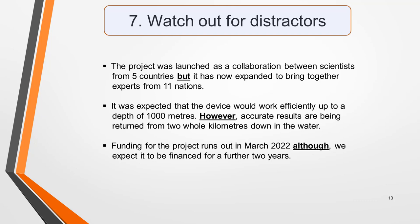Here are some sample sentences containing distractors. I've highlighted the relevant words. The project was launched as a collaboration between scientists from five countries, but it has now expanded to bring together experts from 11 nations. It was expected that the device would work effectively up to a depth of 1000 meters. However, accurate results are being returned from two whole kilometers down in the water. Funding for the project runs out in March 2022, although we expect it to be financed for a further two years. The use of BUT and HOWEVER are particularly common distractors, but there are many different words and phrases that can be used to change or correct a piece of information, so be alert for them.